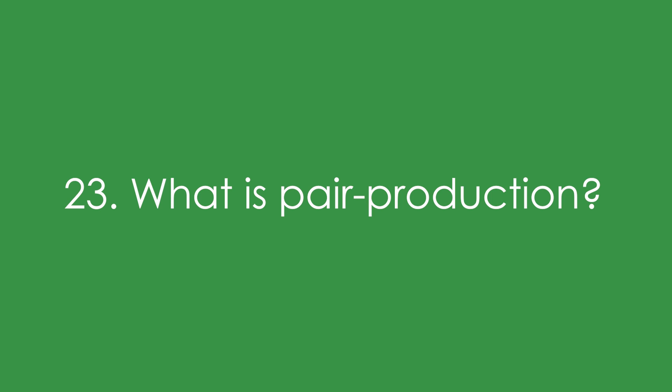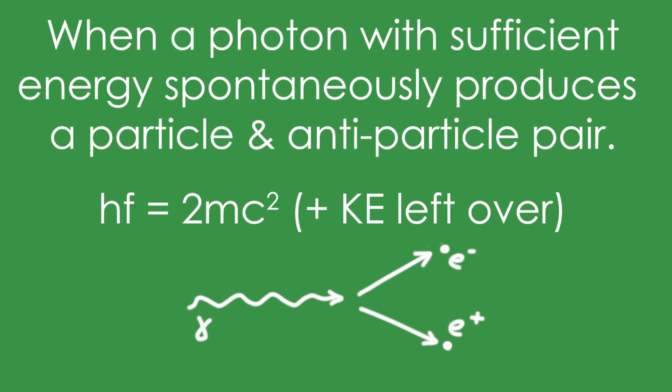23. What is pair production? It's when a photon with sufficient energy spontaneously produces a particle and antiparticle pair. That means that HF goes in and that's equal to two lots of MC squared plus whatever kinetic energy the particles have left over. Quite often, you'll be asked what's the minimum energy that the photon must have. That means there's no energy left over for kinetic energy.